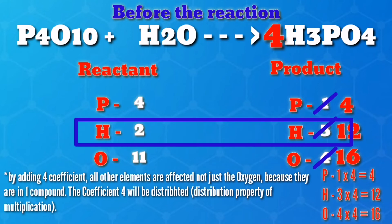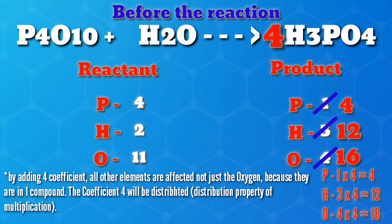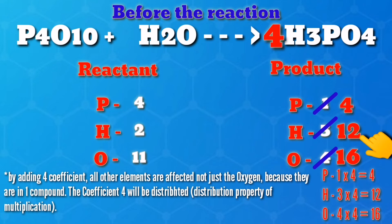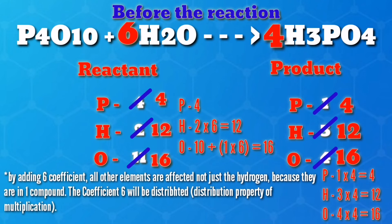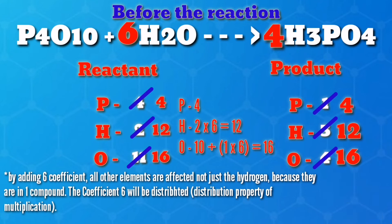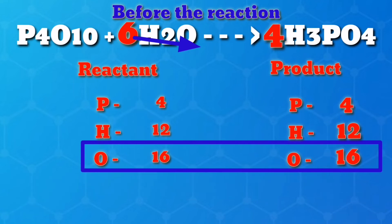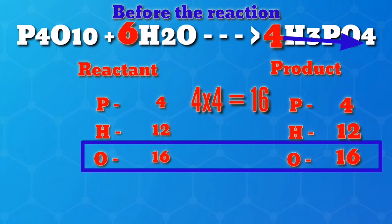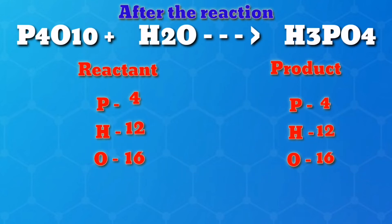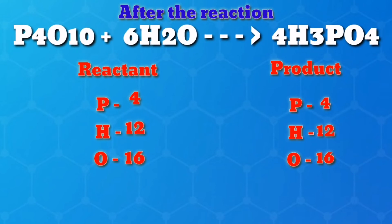Now we can check hydrogen. We still want to avoid balancing oxygen because it occurs in more than one molecule on the left-hand side — it is easiest to start with molecules that only appear once on each side. There are two hydrogen atoms on the left-hand side and 12 on the right-hand side, so we have to put a 6 in front of H2O on the left. At this point, we can check the oxygens: on the left we have 10 atoms from P4O10 and 6 from H2O for a total of 16. On the right we also have 16 — 4 per molecule with 4 molecules — so oxygen is already balanced. This gives us the final balanced equation of P4O10 + 6H2O → 4H3PO4.